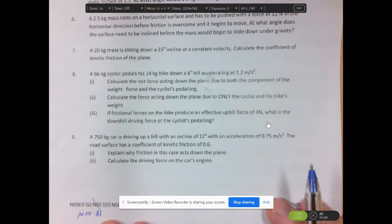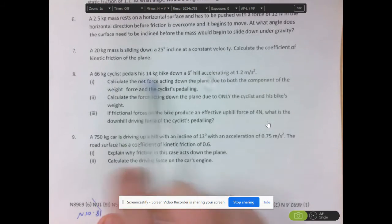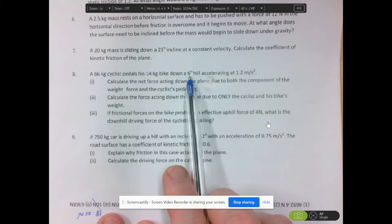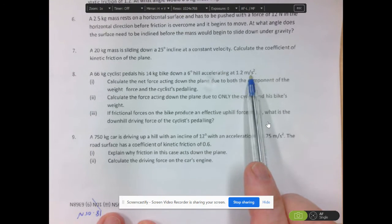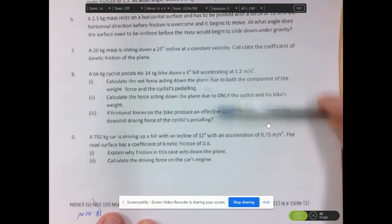Looking at Question 8, we have a cyclist and his 14kg bike going down a hill which has an elevation of 6 degrees. His overall acceleration is 1.2 metres per second squared, and we're asked to calculate three things here.